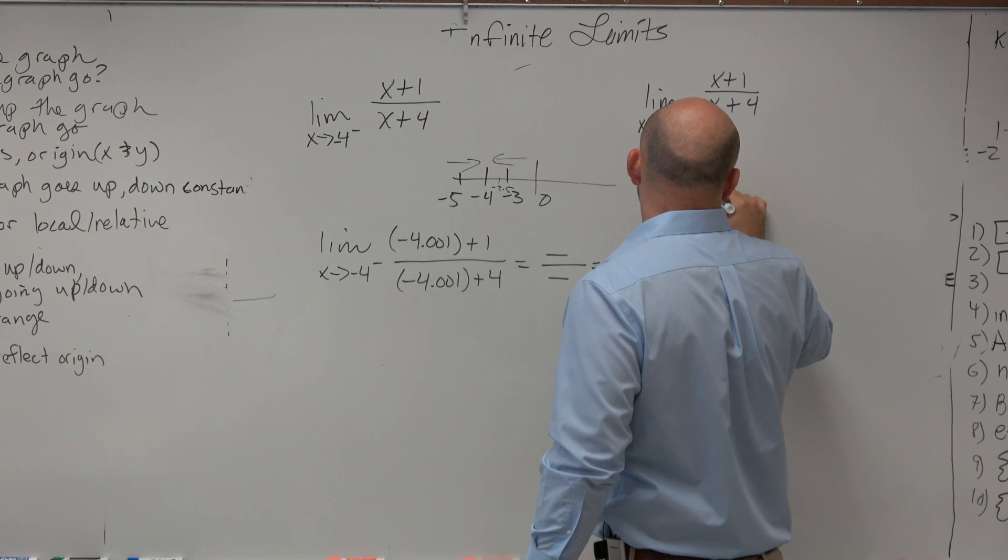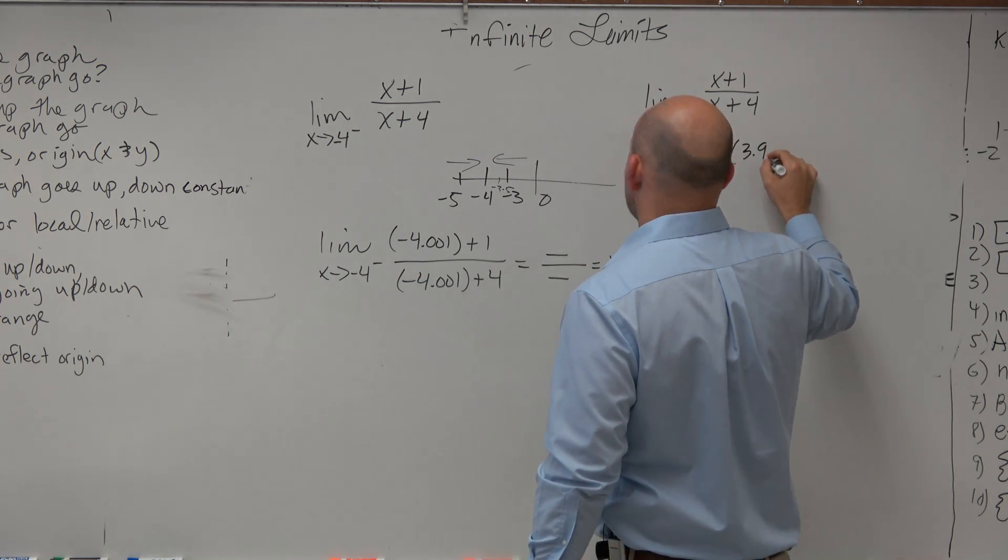X approaches negative 4 from the right. Let's do negative 3.999.